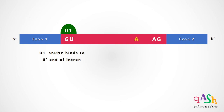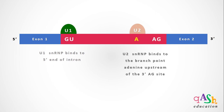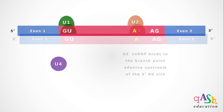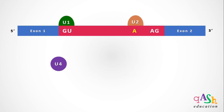In the first step, the U1 SNRP recognizes the GU sequence and binds to it at the 5' end. This is followed by the binding of U2 SNRP at the branch point adenine, which is upstream of the AG sequence.